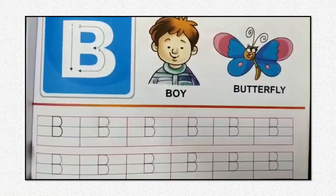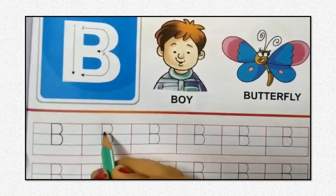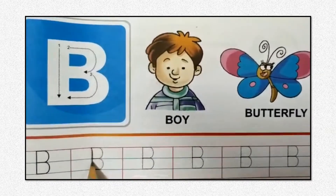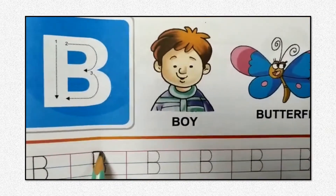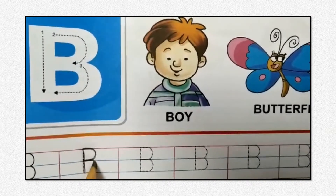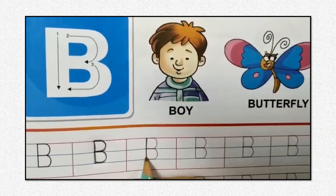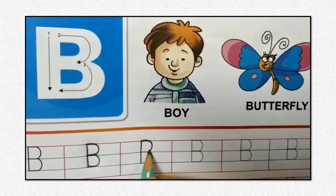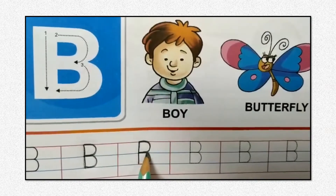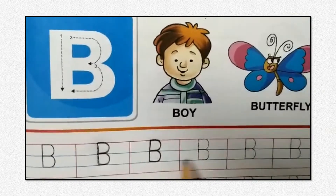Now children, we will learn how to write capital B. For B, we will write a standing line, then a backward curve, and one more backward curve. That is B. A standing line, backward curve — this is P. For B, we will make one more backward curve. That is B.